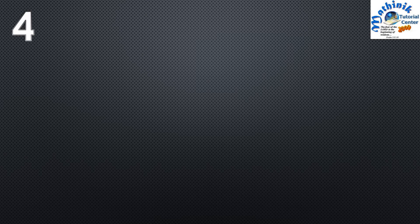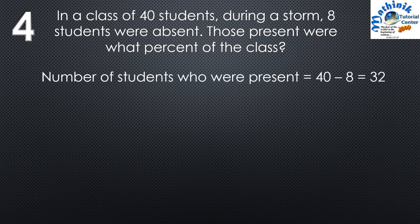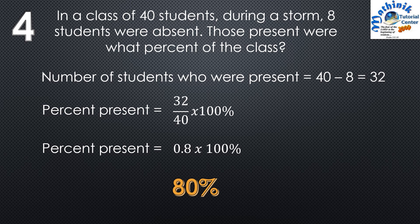Question number 4: In a class of 40 students during a storm, 8 students were absent. Those present were what percent of the class? The number of students present is 40 minus 8, which is 32. So 32 is what percent of 40? We get the percent as 32 divided by 40 times 100 percent — that is 0.8 times 100 — 80 percent.